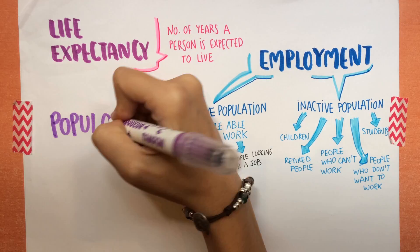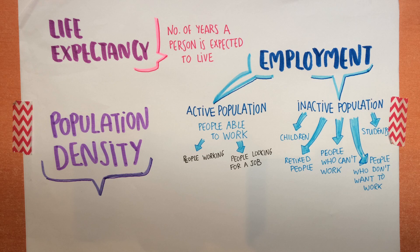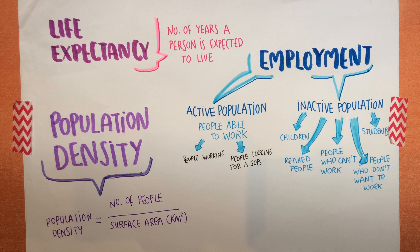Finally there is something called population density. Population density tells us the number of inhabitants that live in a square kilometer. To calculate population density we need to divide the number of people in an area by the surface in square kilometers of that area.